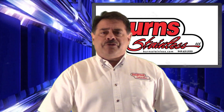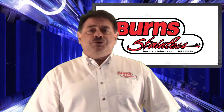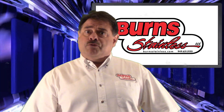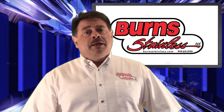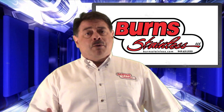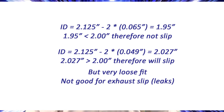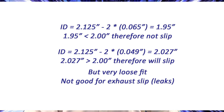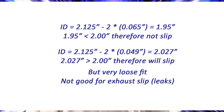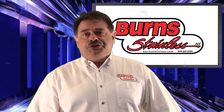A question that I am often asked is: will a 2 and 1/8 inch OD tube slip over 2 inch OD tubing? You are now able to answer your own question. The inside diameter of a 16 gauge 2 and 1/8 inch tube is given by this equation, resulting in 1.95 inch inside diameter, which is less than 2 inch, so therefore it will not slide over a 2 inch tube.